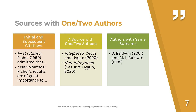For sources with one or two authors, be careful about initial and subsequent citations. When you first cite Fisher (1999), in later citations within the same paragraph you can just use the surname without a date. For sources with two authors, one form is integrated in the text — 'Cesur and Uygun (2020)' — and the other is non-integrated in parentheses: '(Cesur & Uygun, 2020)'.